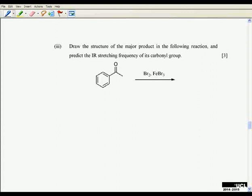Part three of this question is looking at both aspects: the aromatic chemistry and the infrared. Again, it's important to read exactly what the question is asking you. This clearly says draw the structure of the major product. It doesn't say tell me what the mechanism is. Drawing a mechanism will not get you any extra marks in this question.